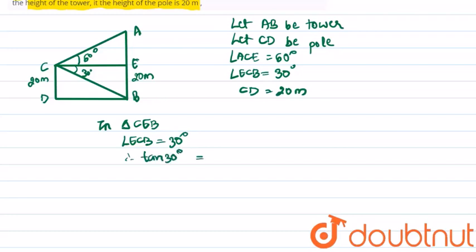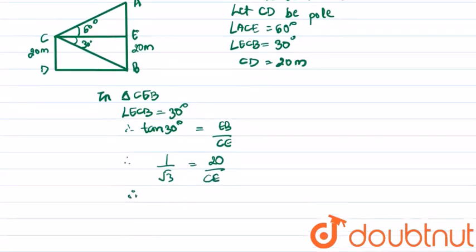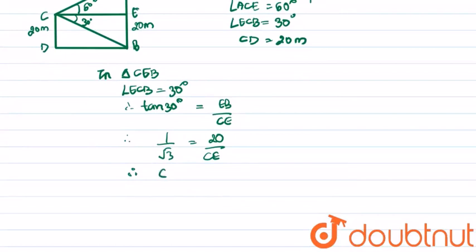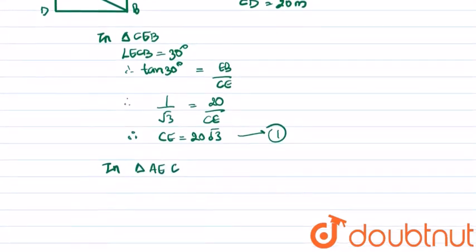...equals EB upon CE. Therefore 1 upon root 3 equals EB, that is 20, upon CE. Therefore CE equals 20√3. Let us mark this as equation 1.